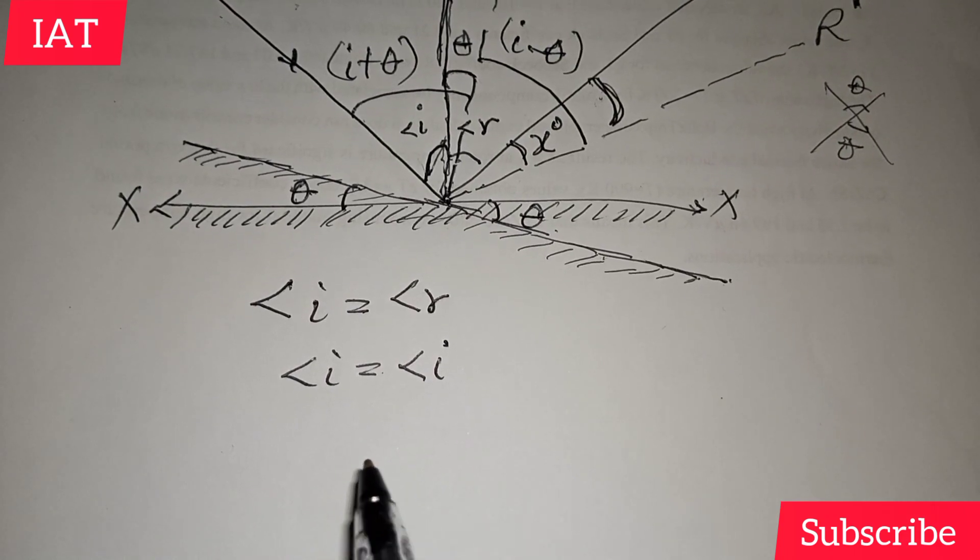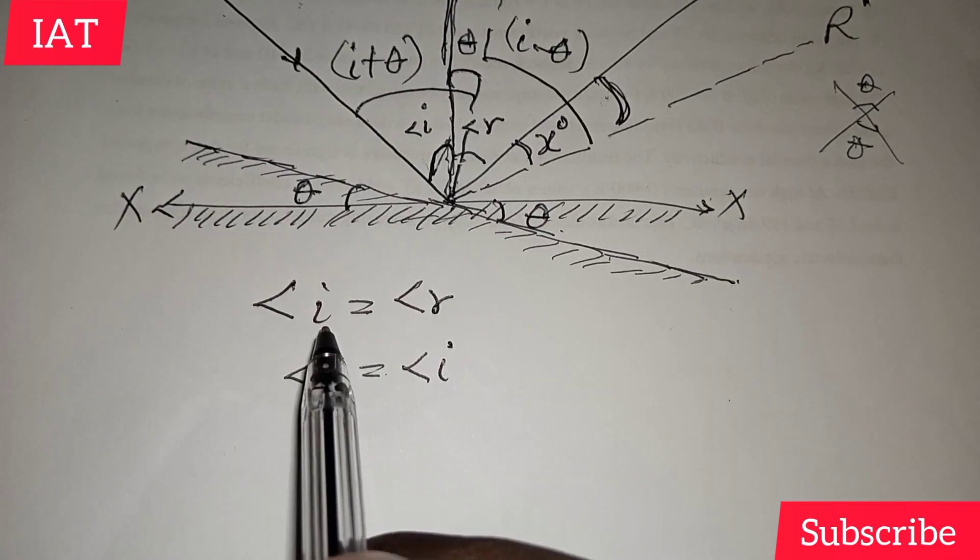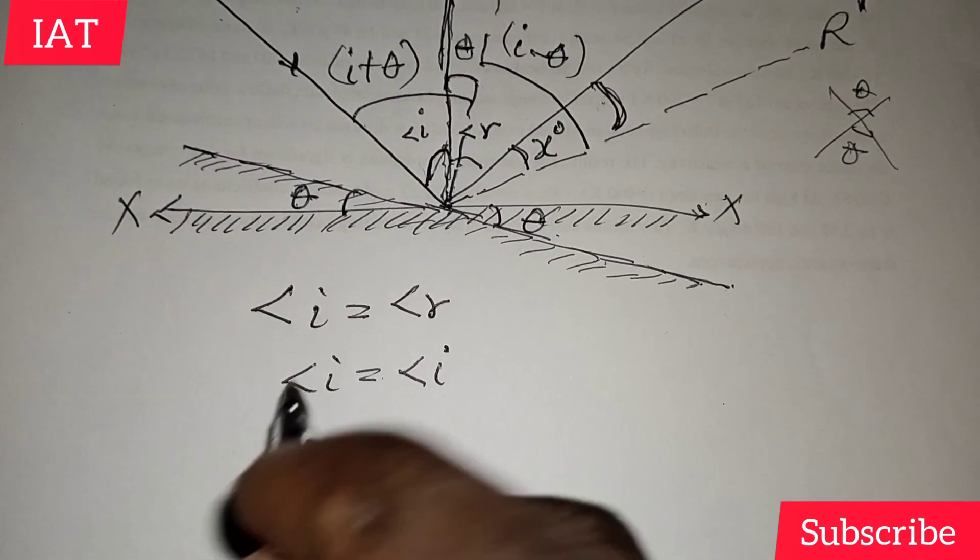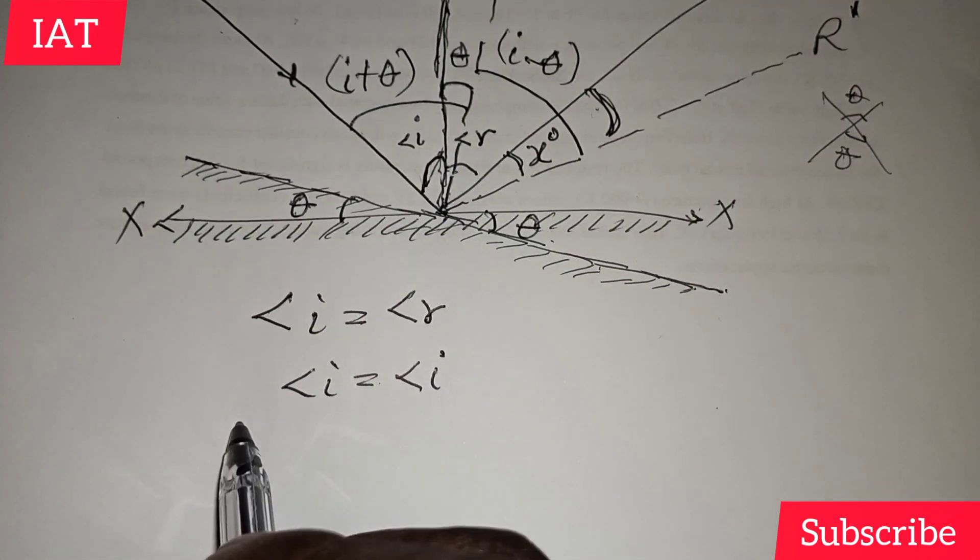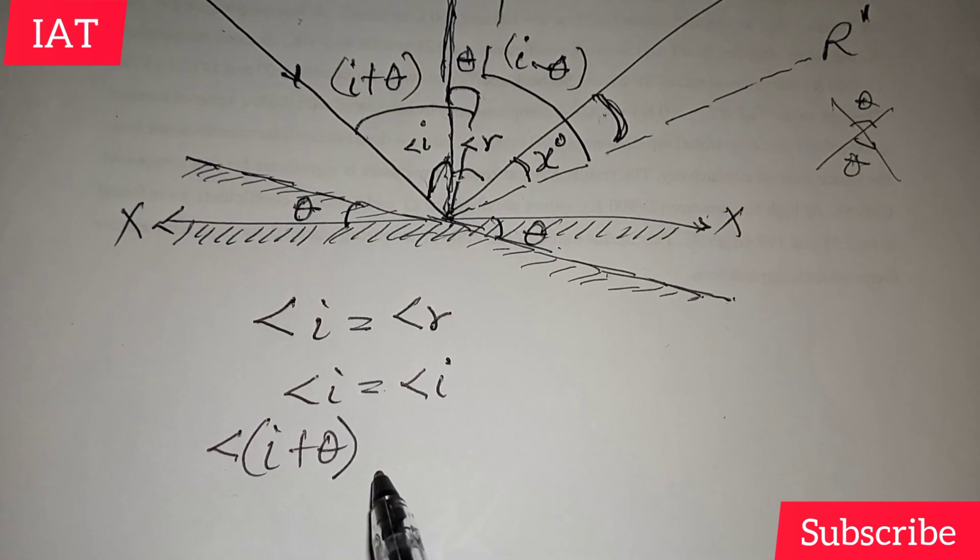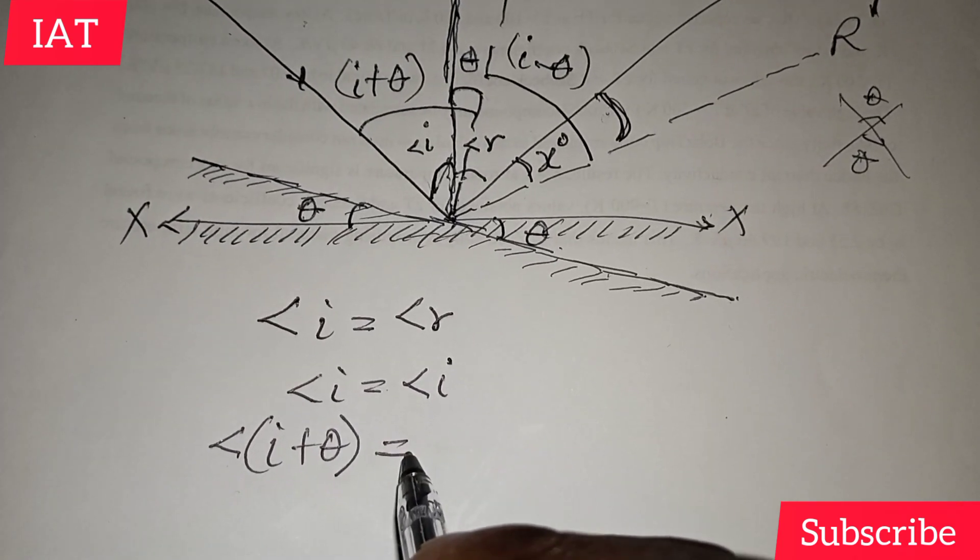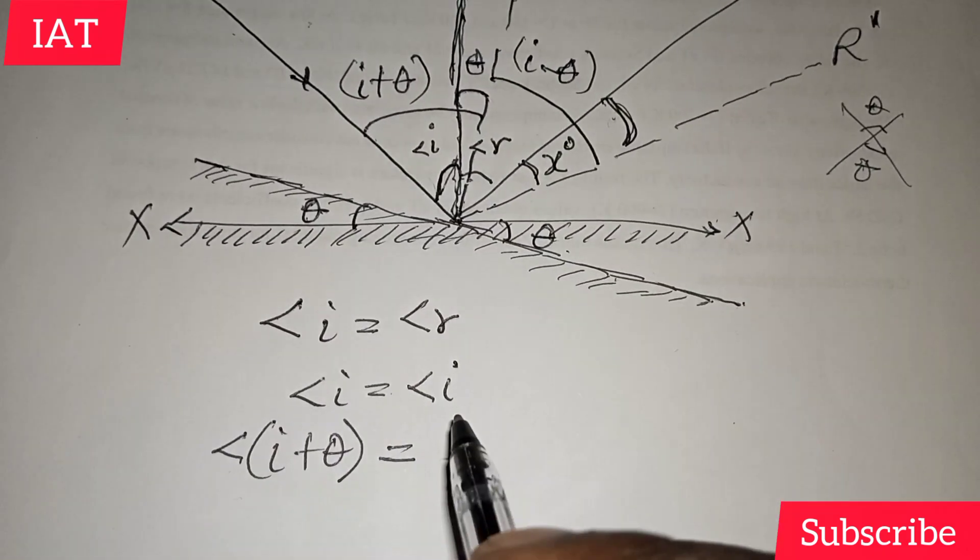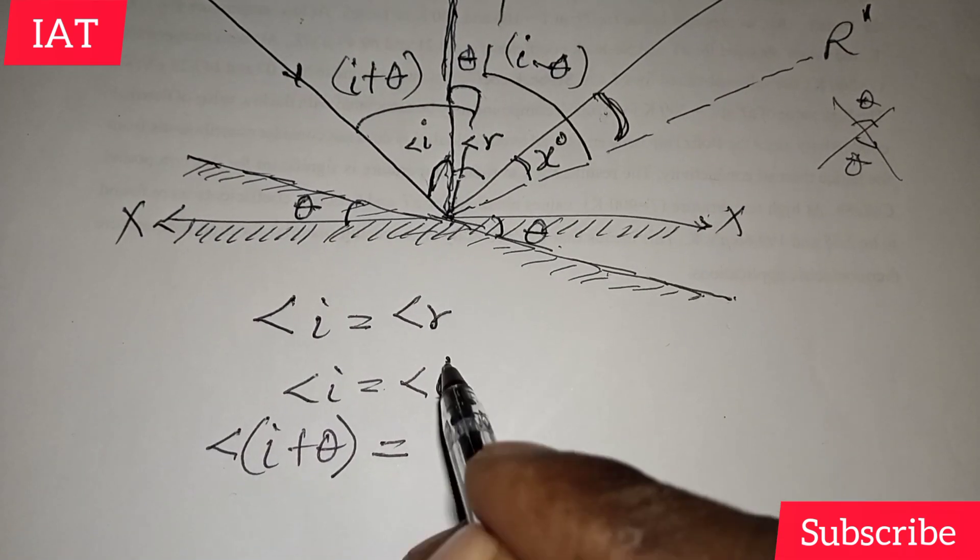So we have that angle i is also given as i+θ. And this will be equal to, we have this one to be r, as for r, which is the same thing as this.